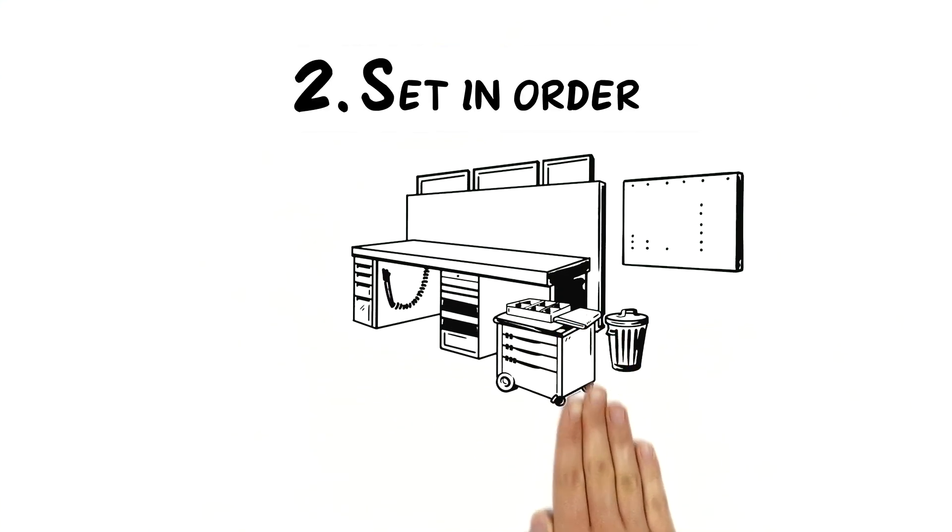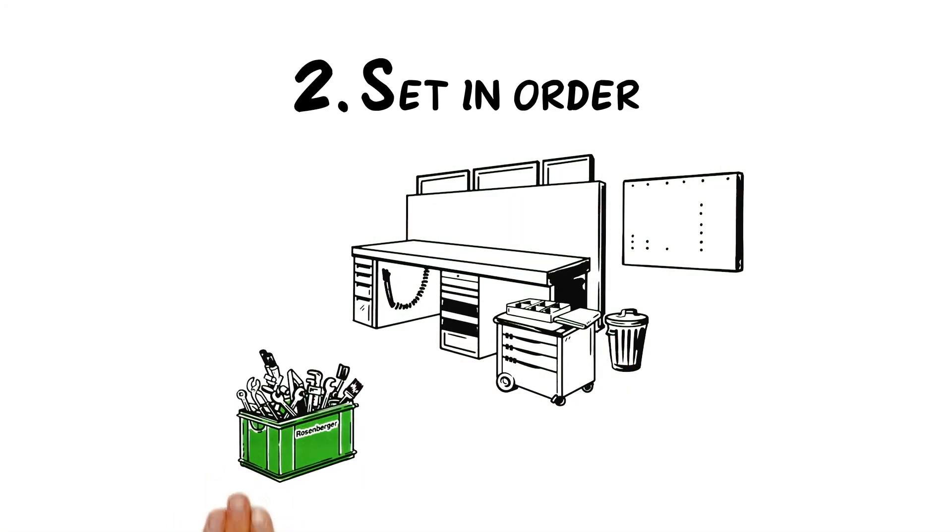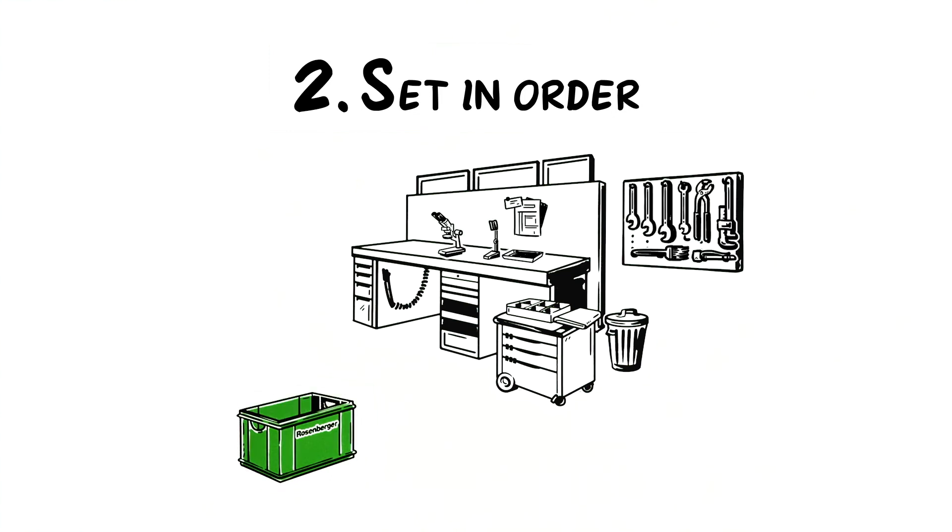The second S stands for Set in Order. We organize our tools from the green box neatly and logically and define locations for completed items and received items. Shelves, drawers and binders need to be labeled accurately.